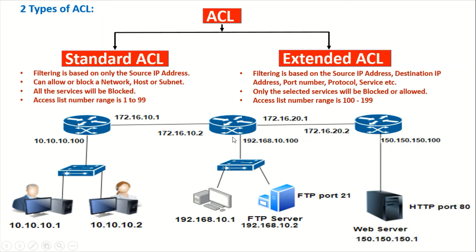When this user tries to connect to the FTP server, the request comes in and is processed by the router against its ACL. The ACL has a permit rule to allow this user to reach the destination on port 21 for FTP, so the request is allowed. However, if the same user tries to access some other service running on that server, the request will be denied — because the extended ACL rule only permits port 21 for FTP, not any other service.